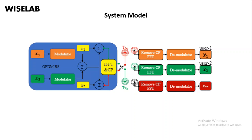At the reception side, where we have user 1 and user 2, the receiver simply receives the information, removes the cyclic prefix, performs the FFT, and then demodulation. The user does not do any other computation. This is very important because we are going to need less power to receive the signal.